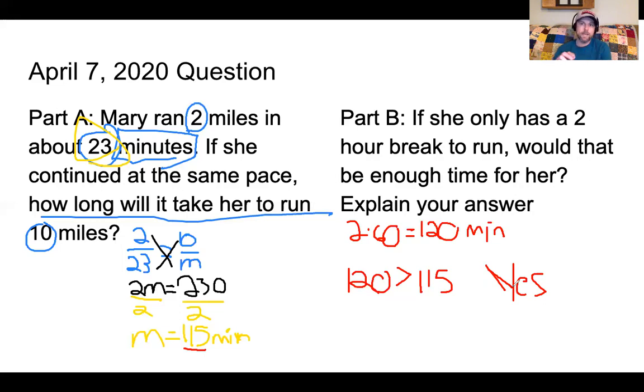But if you said no, because she would need extra time to get ready, extra time to cool down, then theoretically you could say no and say yes it would only take her 115 minutes to run, but she's going to need a little bit of time before that to warm up, a little bit of time after that to cool down, and maybe she wants to take a shower right after she runs so that she's not all stinky and sweaty when she gets back to work. So either answer could be correct, it depends completely on your explanation.